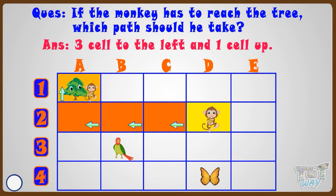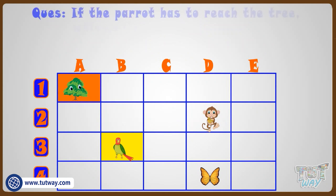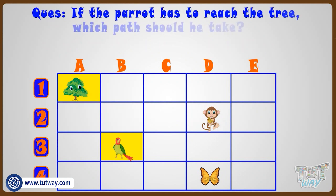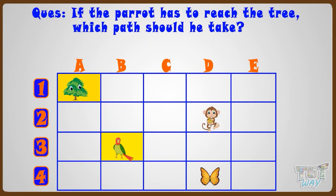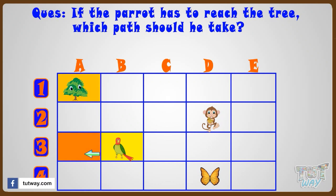Now let's find the path if the parrot has to reach the tree. Which path should he take? 1 cell to the right, and then 2 cells up.